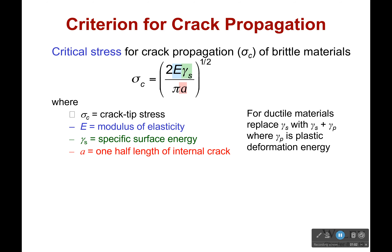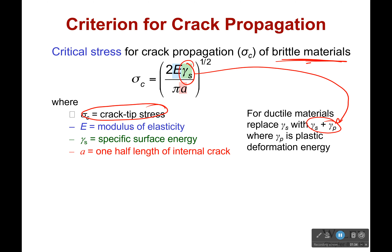So when do these cracks begin to grow? There is a critical stress for crack propagation, at least for brittle materials. For ductile materials it's there as well — you just have to replace this term with these two right here, where γP is the plastic deformation energy. The critical stress for crack propagation in brittle materials is given by that equation: E is the modulus of elasticity, then we have the specific surface energy which you have to look up or be given, and then we have the length of the internal crack.